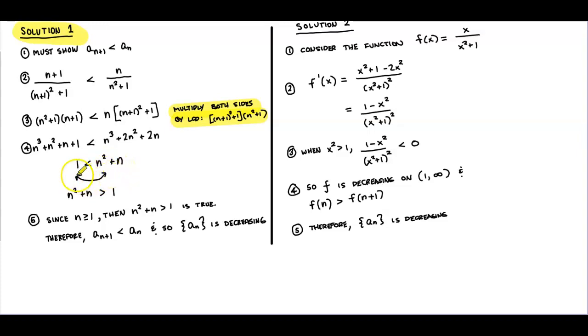We rewrite this so that the variable terms are on the left side — n² + n — and the constant on the right, then flip the inequality to show that n² + n is greater than 1.